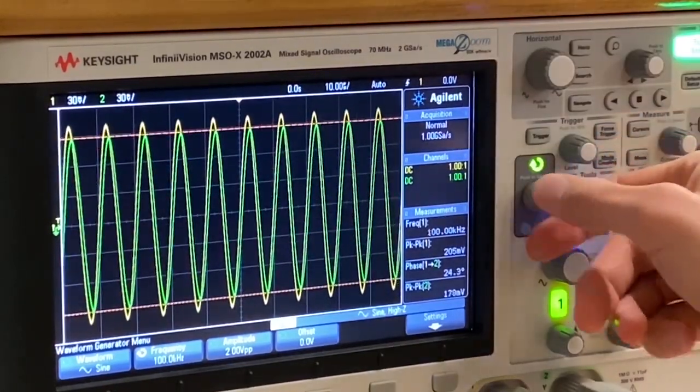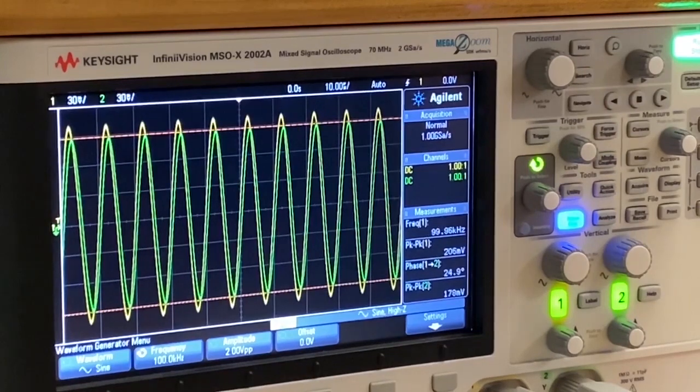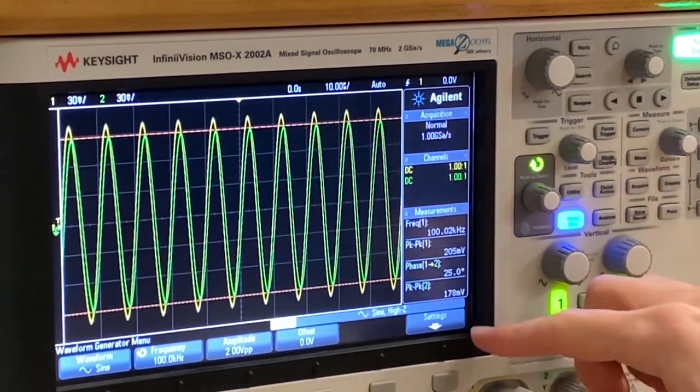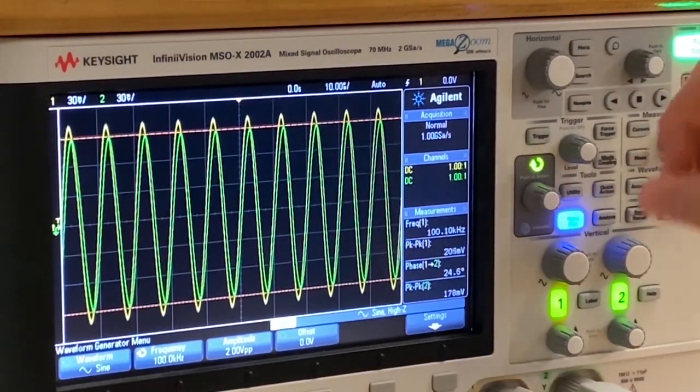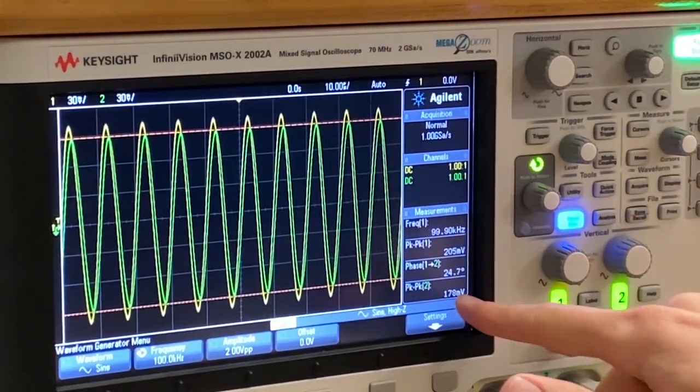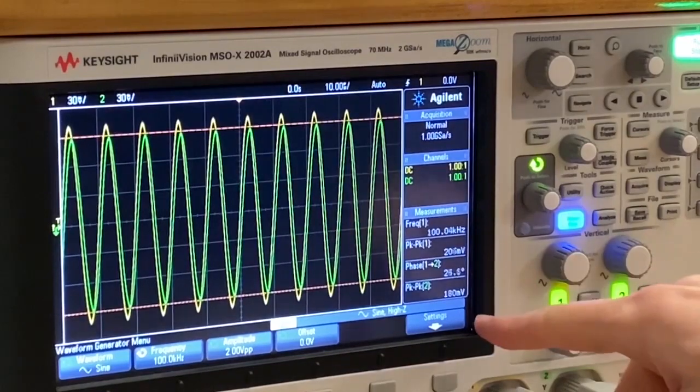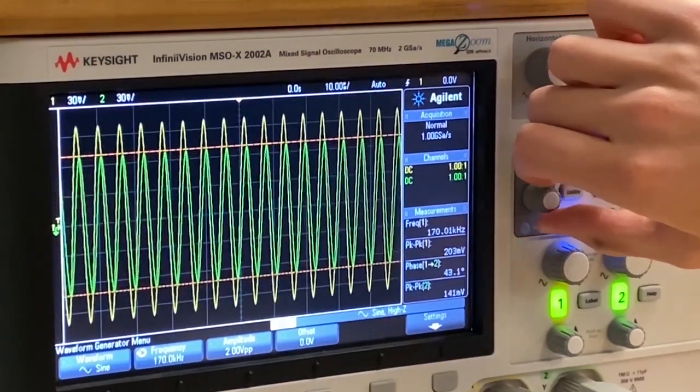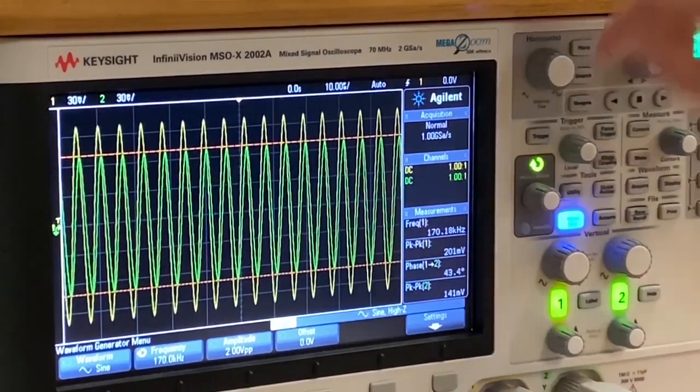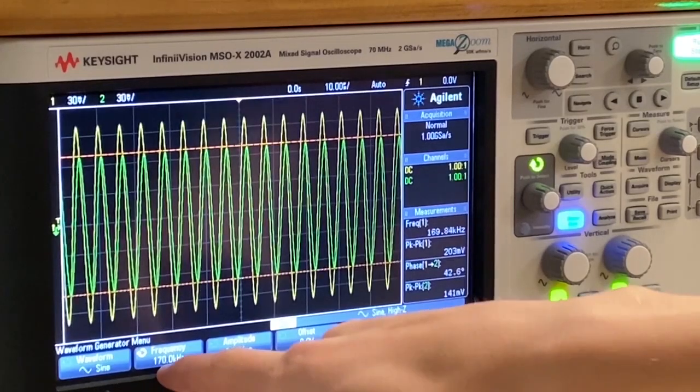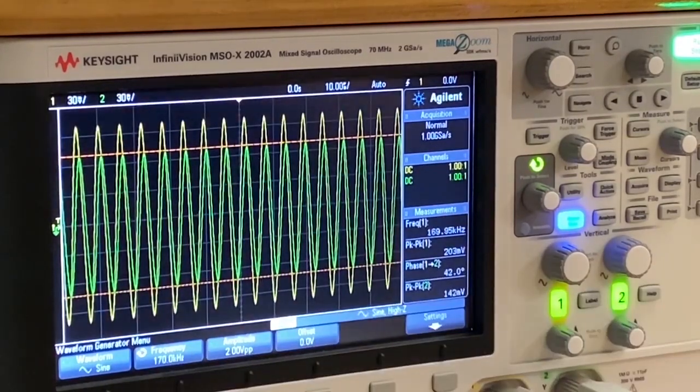So the point that we're looking at is whenever our output amplitude is three decibels lower than our input. I've done the math and what this comes out to for us is right around 141, 143, somewhere around there, millivolts for our channel two. So if we increase our frequency until this reads 141, 142, then this is going to be one of our two frequencies for the bandwidth.